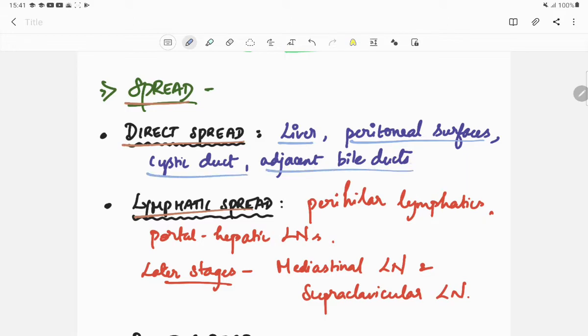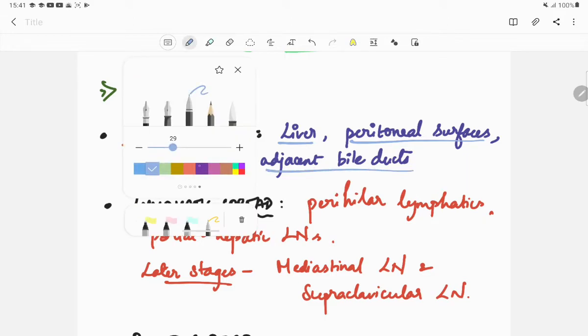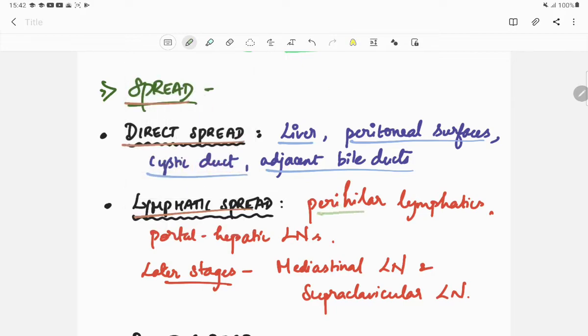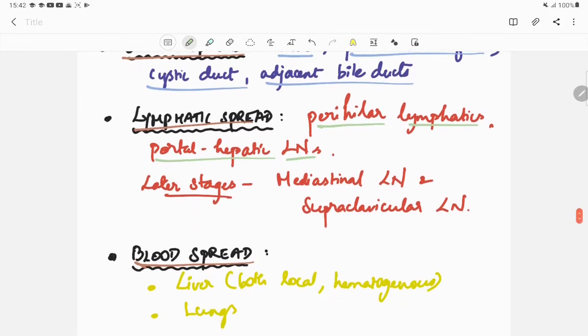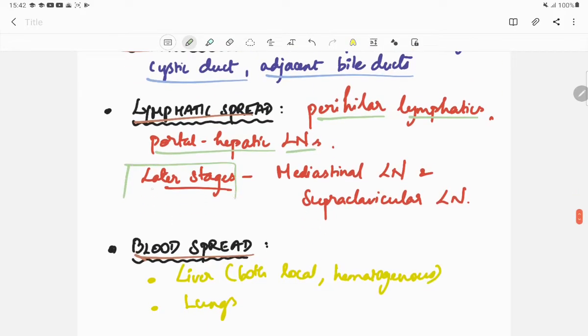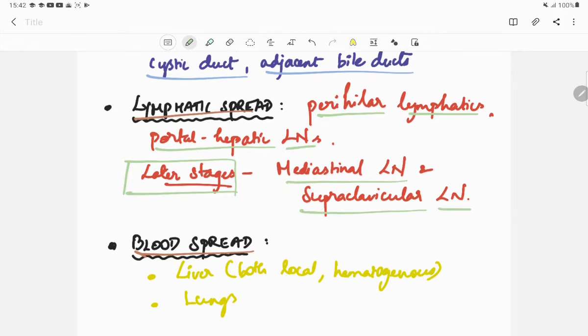Next is lymphatic spread. Lymphatic spread occurs to the perihilar lymphatics and the portal hepatic lymph nodes. In the later stages, lymphatic spread is to the mediastinal lymph node and the supraclavicular lymph node.